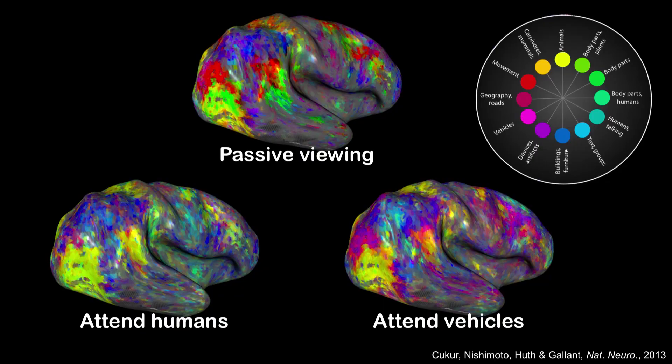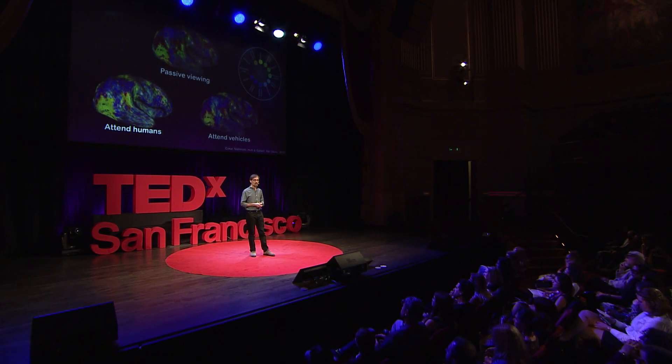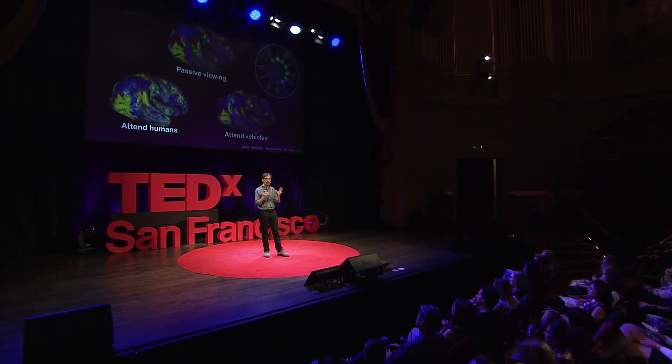This is data from a simple experiment where people passively watch movies versus attending to humans in the movies versus attending to vehicles. The conceptual maps in these three cases are different. The maps vary least in the visual system but vary enormously in prefrontal cortex, because prefrontal cortex represents abstract thought, plans, and goals. As you change your task, the activity in prefrontal cortex represents different kinds of quantities. For example, if you lose your cat, your prefrontal cortex becomes a giant cat detector and all other functions are suppressed — everything tries to represent cats as much as it can.